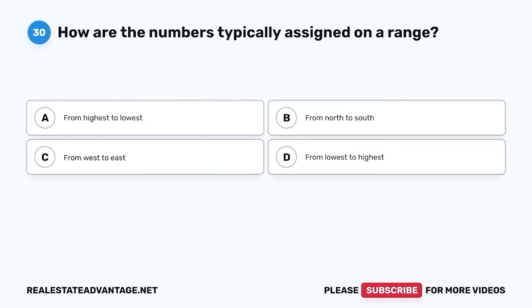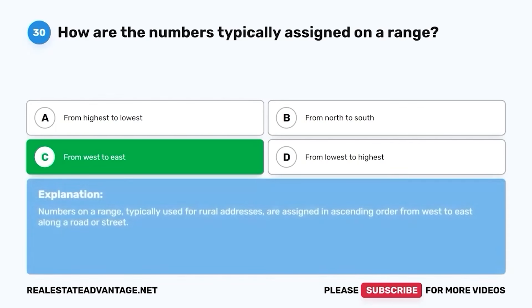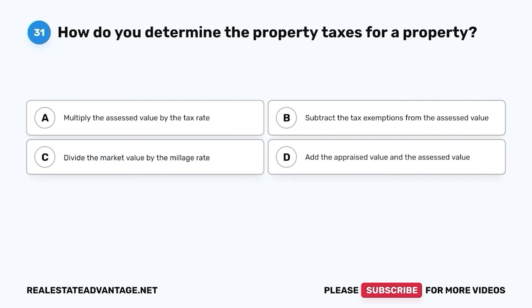Question 30. How are the numbers typically assigned on a range? A. From highest to lowest. B. From north to south. C. From west to east. D. From lowest to highest. The correct answer is C. From west to east. Numbers on a range, typically used for rural addresses, are assigned in ascending order from west to east along a road or street.